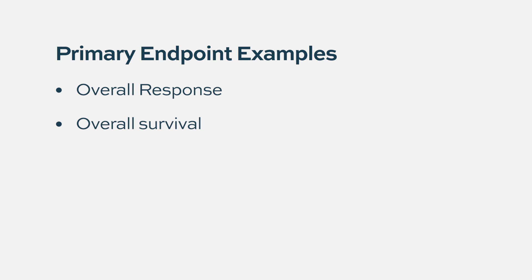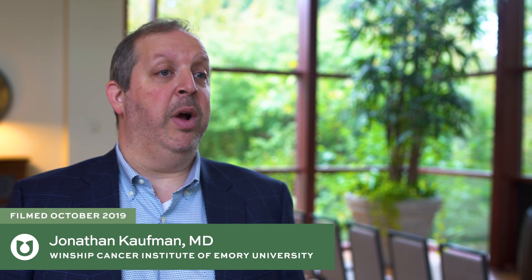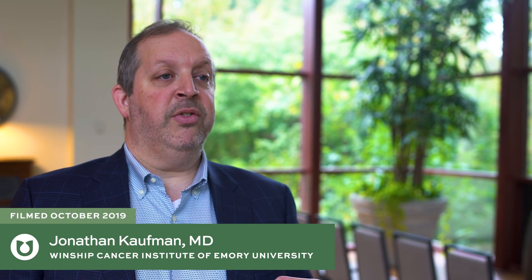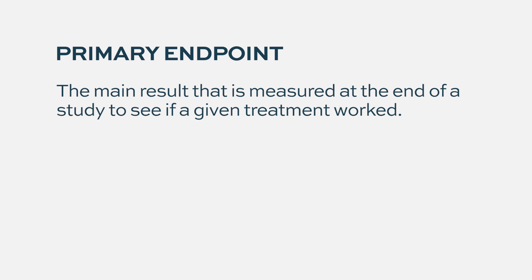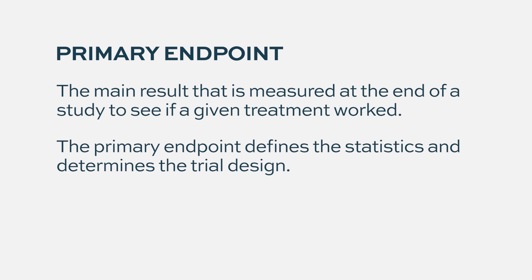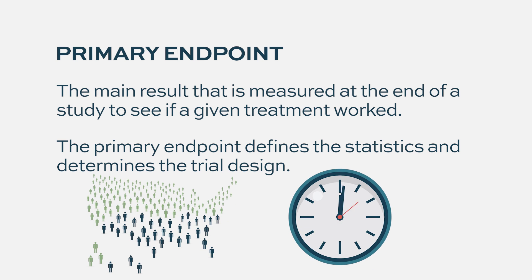Usually for most trials, the primary endpoint will be something like a response rate or overall survival. In the future, primary endpoints may include the percentage of patients who achieve MRD negativity. When we design a trial, we define the primary endpoint — the single thing that is the purpose of the trial, the trial's question. That primary endpoint largely defines the statistics, how we're going to design the trial, how many patients we need, and how long the trial needs to be.